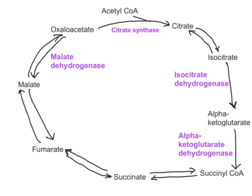Out of all these reactions, there are some which are irreversible. The conversion of oxaloacetate with acetyl-CoA to make citrate is an irreversible reaction. The conversion of isocitrate into alpha-ketoglutarate is an irreversible reaction in TCA cycle. And the third irreversible reaction in TCA cycle is the conversion of alpha-ketoglutarate into succinyl-CoA.